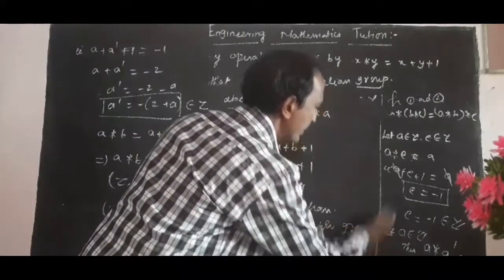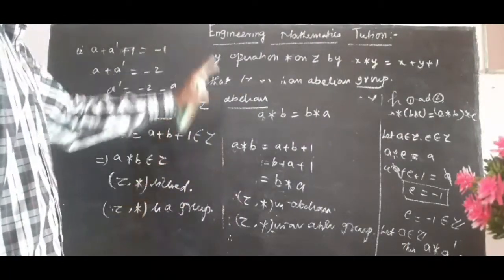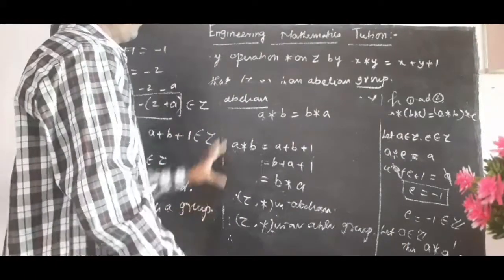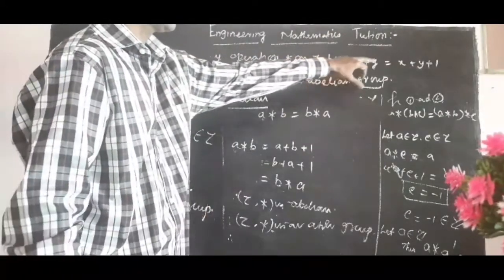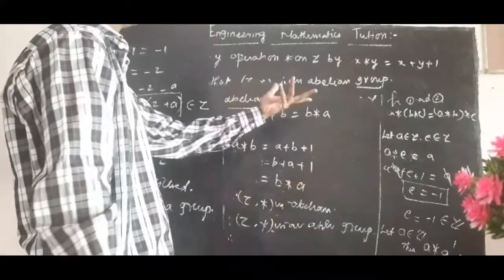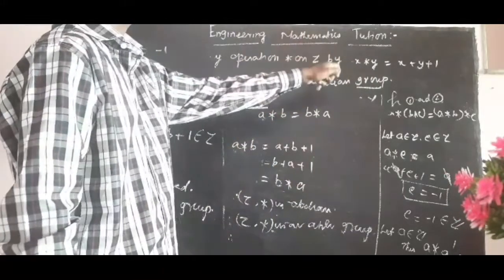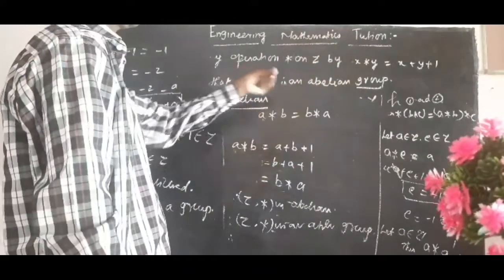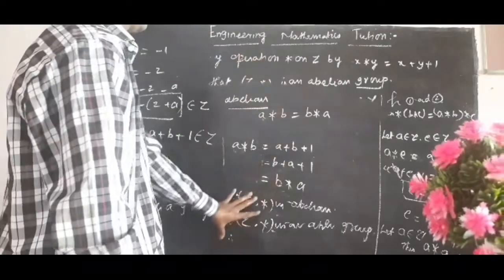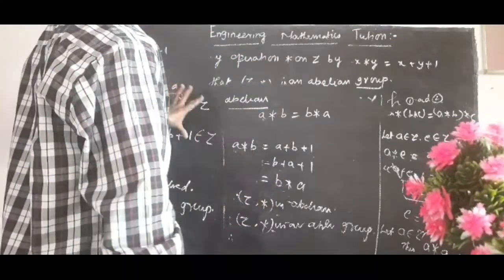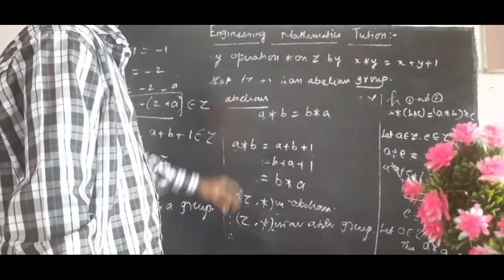So the problem is complete. These are simple application examples of a group problem. The binary operation star is defined as x star y equals x plus y plus 1. In the next video, we will see another example.